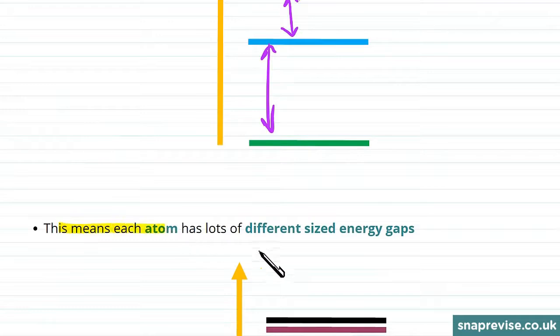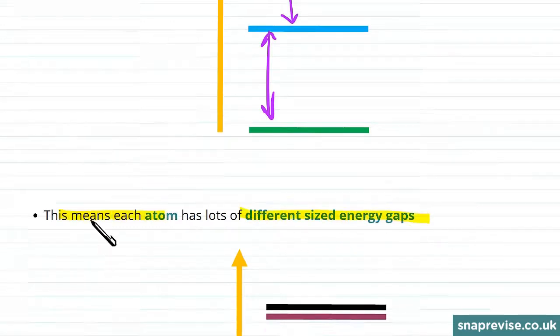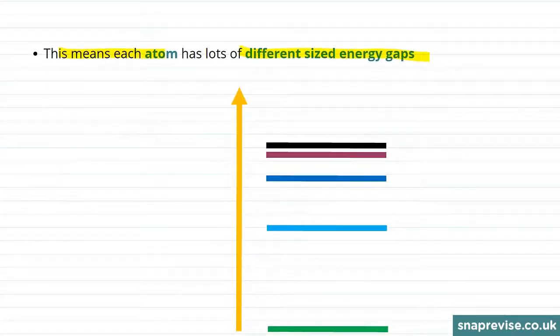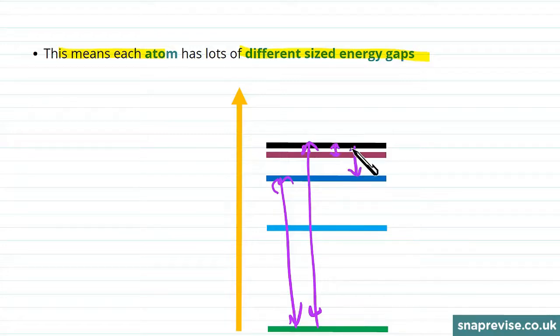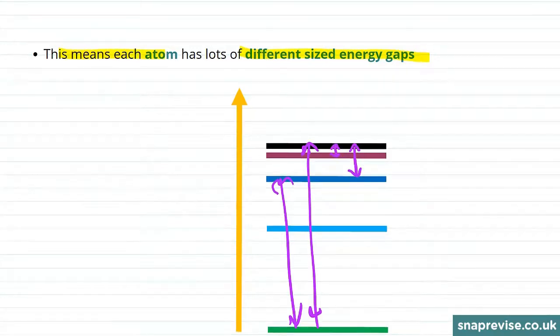This means each atom has lots of different sized energy gaps. There's energy gaps as big as this or even as big as this, and then there's smaller energy gaps like this or this. These are all gaps that electrons are allowed to move across.